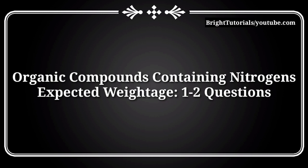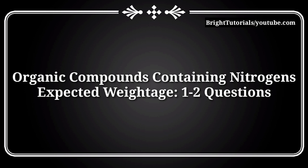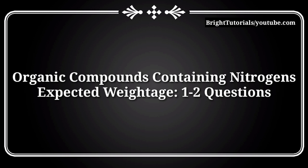After that, go to Organic Compounds containing Nitrogen. This chapter contains one to two bits weightage in MSET. Important topics include preparation, chemical reactions, name reactions, and physical properties. With this, we have successfully completed the MSET 2021 chemistry syllabus.